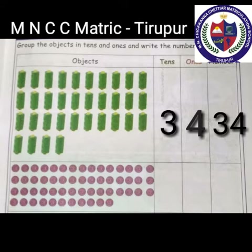See the first picture — there are 3 rows. One row contains 10 threads, another row contains another 10, and the next row contains another 10. Totally 3 tens. And there are 4 ones. Therefore, the number is 34.